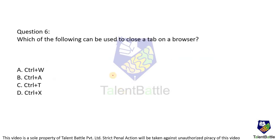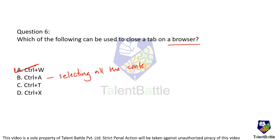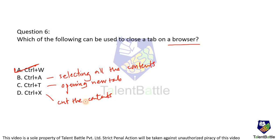The next question: which of the following can be used to close a tab on a browser? Ctrl+A selects all contents, Ctrl+T opens a new tab, and Ctrl+X is the cut command — not browser-specific. Ctrl+W is actually utilized for closing the tab. So option A — Ctrl+W — is the correct answer.